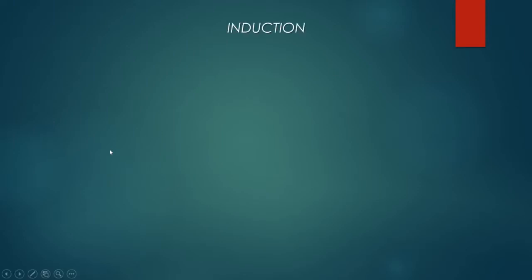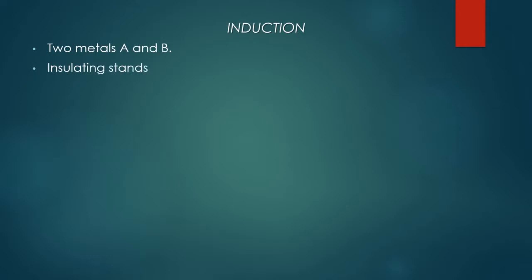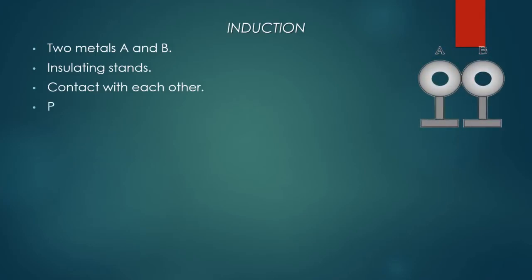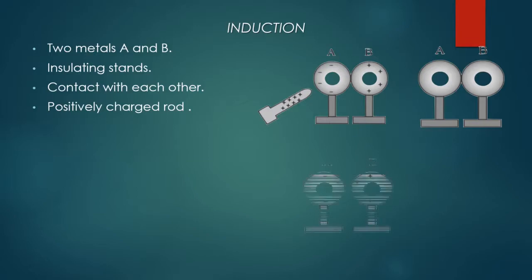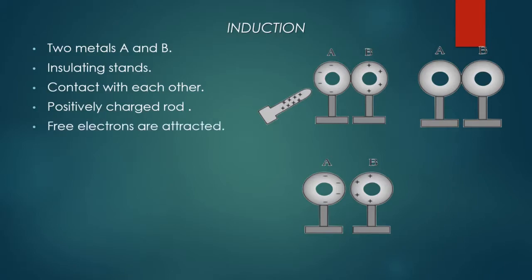Let's talk about what induction is. Let two metals A and B be placed on insulating stands, held in contact with each other as shown in the diagram. When a positively charged rod is brought near sphere A, free electrons in both spheres are attracted towards the rod and move towards the left surface of A from the right surface of B. So the left surface of A acquires negative charge due to excess electrons, and the right surface of B acquires positive charge due to deficiency of electrons.